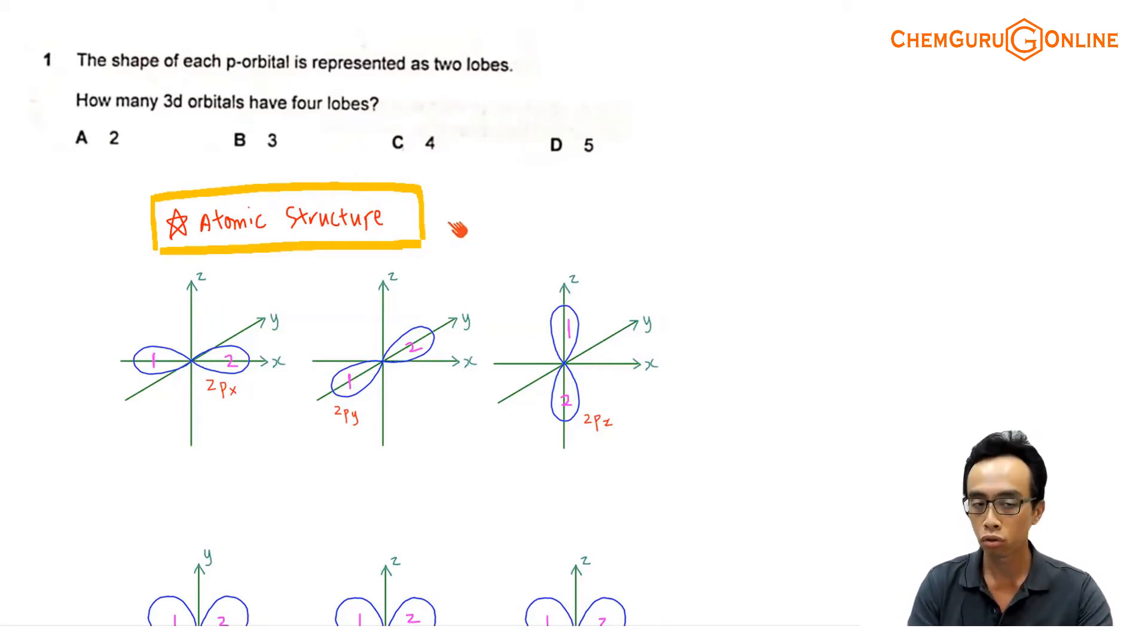So we should know the shapes of our s orbital, p orbital, as well as d orbitals. These are all in syllabus. Now s orbital, we are not showing here because we know that it is spherical in terms of shape, it is pretty straightforward.